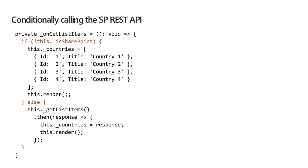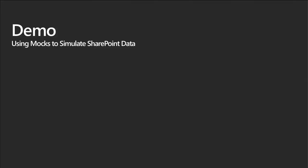I've created a property called isSharePoint that returns a Boolean value. It checks if the current EnvironmentType equals SharePoint (modern page) or ClassicSharePoint (classic page) — if either is true, I know I'm in a real SharePoint environment. In the onGetListItems method, if isSharePoint is false, I set the countries property to static mock data in an array. Otherwise, I use the getListItems method to call the SharePoint REST API and set countries to the value from the response.